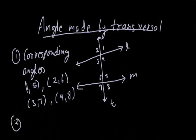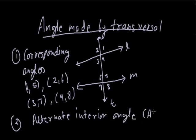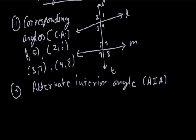The second type of angles are alternate interior angles — written in short as A.I.A. For alternate interior angles, we always see a Z-shape. In this figure, angle 3 and angle 5 form an alternate interior pair because we can see the Z-shape between them.